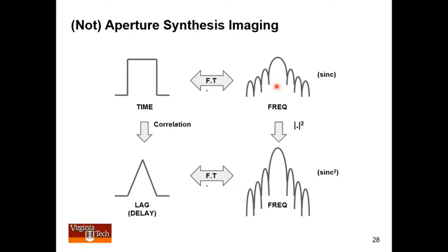Let's not think about aperture synthesis imaging. Let's think instead about just time and frequency. If you have a pulse in time, you take the Fourier transform, you get a sinc function. Every engineer knows this. In fact, if you take magnitude squared of that sinc function, you get sinc squared, which is the power spectral density of that pulse. But you can get the same result by computing the correlation of the sinc.